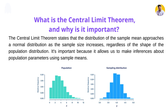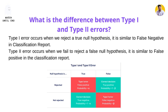Our next interview question is: what is the difference between type one and type two errors? Type one error occurs when we reject a true null hypothesis — it is very similar to the false positive in the classification report used in machine learning. Type two error occurs when we fail to reject a false null hypothesis, or we accept the false null hypothesis. It is similar to the false negative in the classification report. As shown in the chart, it is similar to precision and recall — you need to make a trade-off between both of them.